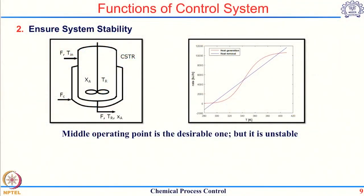Similarly, chemical systems can sometimes be unstable, and the job of a control system is to stabilize that particular unstable operating point. An example of such a system is an exothermic CSTR, which you may have studied in your reaction engineering course. In an exothermic CSTR, to maintain the temperature inside the reactor you need some cooling mechanism. If you look at how heat is generated inside the reactor, you get a sigmoidal curve as a function of reactor temperature, whereas heat removal is a linear function of temperature. Wherever these two curves intersect, the rate of heat generation equals the rate of heat removal — those are the three points at which the CSTR can operate.